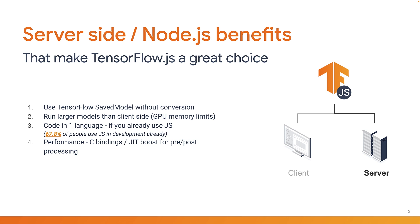And then there's performance. The Node.js implementation talks to the same C++ bindings behind the scenes as Python, so you'll get the same server-side hardware acceleration for both CPU and GPU. However, due to the just-in-time compiler in JavaScript, if your model requires pre- or post-processing of data, you can get a performance boost in Node for that for free.